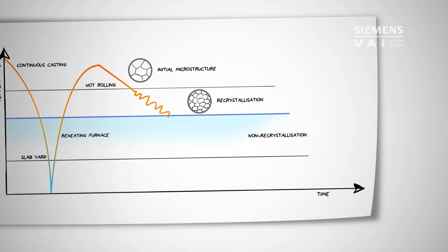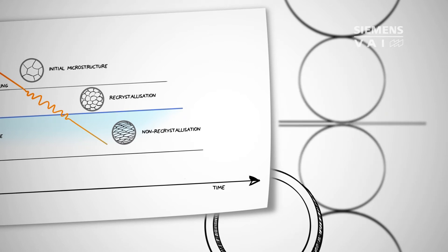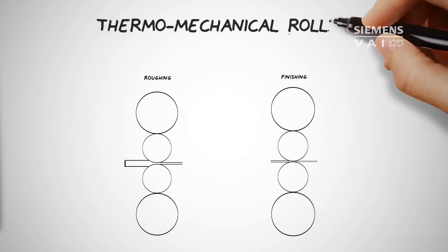The second rolling step is performed below the non-recrystallization temperature in order to achieve a flat pancake-like shape as a basis for a fine grain structure after cooling. This is called thermomechanical rolling.